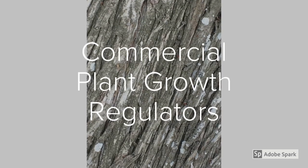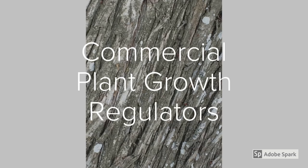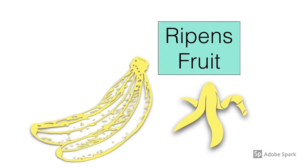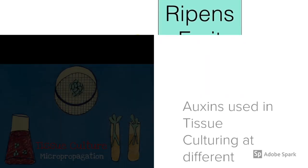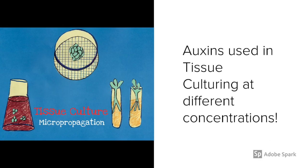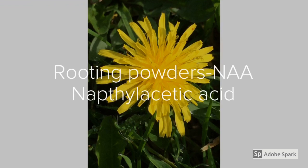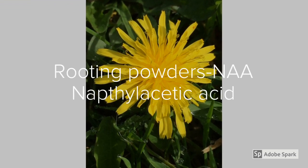For your exams, you must be able to give examples of commercially prepared plant growth regulators. Ethene is used to commercially ripen fruit. Auxins are used in the micropropagation of plants, which is a form of tissue culturing where a group of undifferentiated cells are treated with different concentrations of auxins to stimulate shoot and root growth. Another example is rooting powders, which are used to stimulate the production of roots from plant cuttings — for example, naphthalacetic acid.